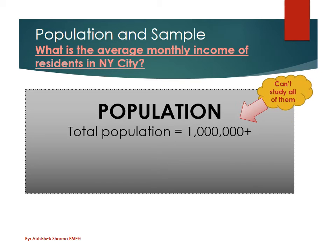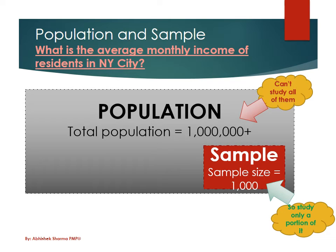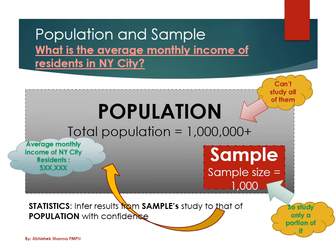Since we cannot study all of them, what we do is pick a sample — say 1,000 people — get their information, and based on the data analysis from these 1,000 people, we make a statement like: the average monthly income of people living in New York City is so and so. So we are inferring results from samples and then making a conclusion about the population.